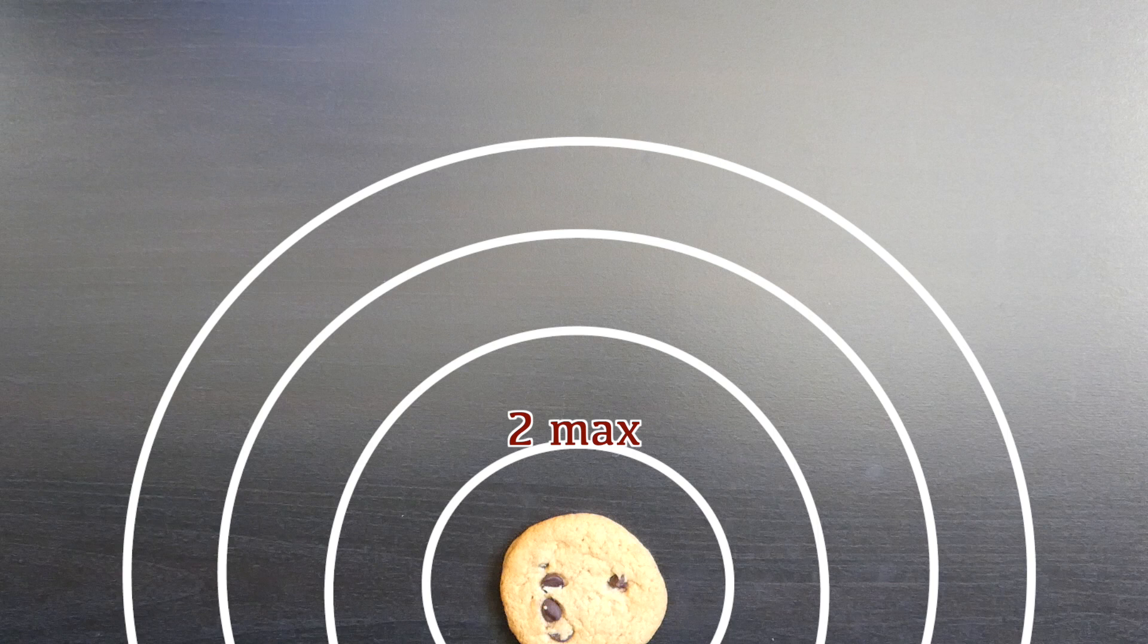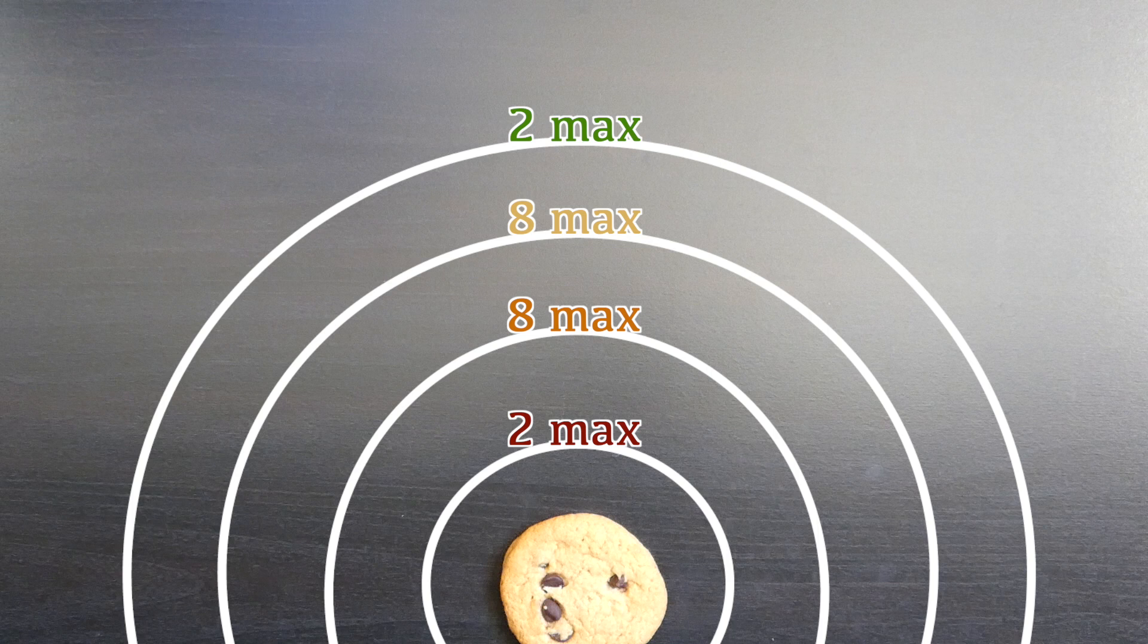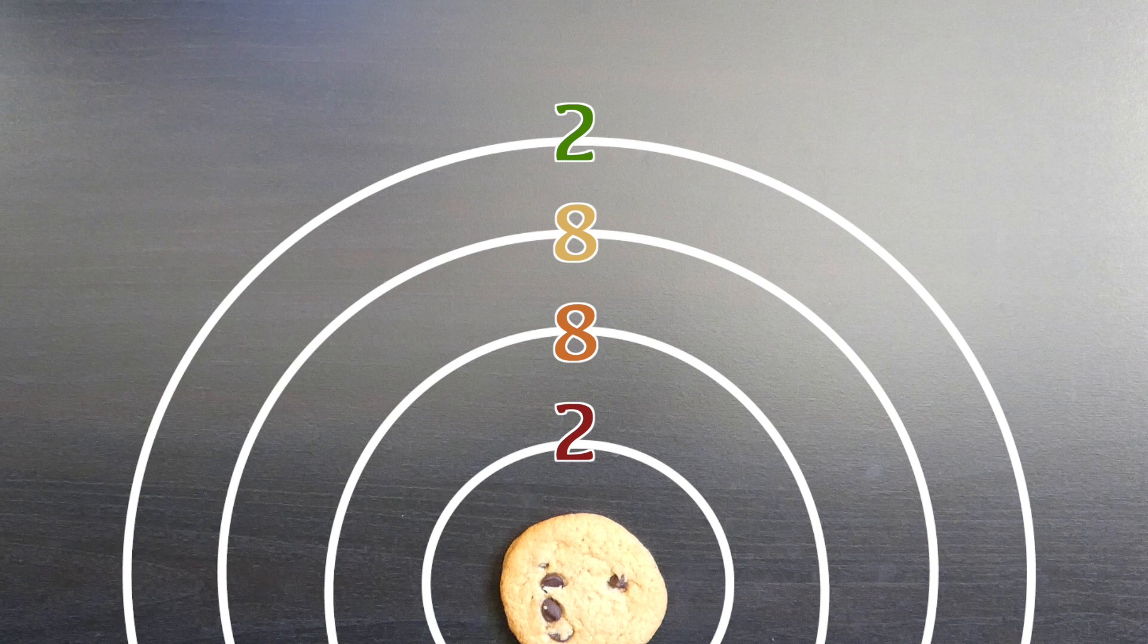The second shell can hold eight electrons. And the third shell can also hold eight. With the fourth shell, however, only two electrons can fit. So 2882 is the overall pattern.